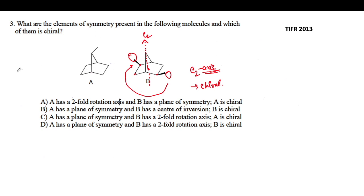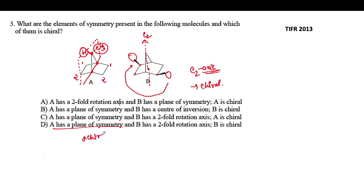What about molecule A? A is not chiral. This carbon is tetrahedral and has a methyl group on one side and a hydrogen on the other. The plane containing the hydrogen and the methyl bisects the whole molecule into half — the two carbons on each side are reflected, and the methyl group and hydrogen are bisected by the sigma plane. So A has a plane of symmetry and is achiral. Therefore: A has a sigma plane of symmetry and is achiral; B has a two-fold rotation axis and is chiral. The correct answer is option D.